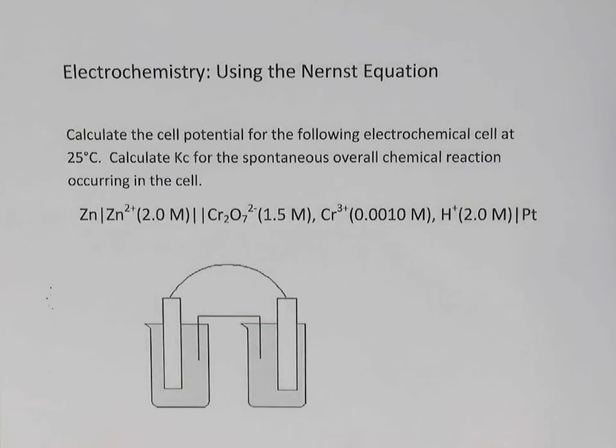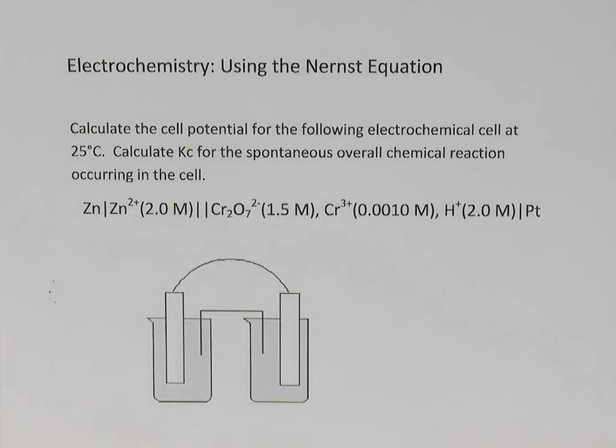In this video we're going to take a look at an electrochemistry advanced topic for AP chemistry. It's using the Nernst equation to calculate the cell potential when an electrochemical cell is under non-standard conditions. We're also going to use the Nernst equation to find the equilibrium constant Kc for the reaction happening in this cell.